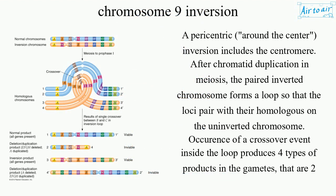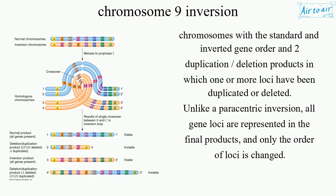A paracentric inversion, around the center, includes the centromere. After chromatid duplication in meiosis, the paired inverted chromosome forms a loop so that the loci pair with their homologous on the uninverted chromosome. Occurrence of a crossover event inside the loop produces four types of products in the gametes: two chromosomes with the standard and inverted gene order, and two duplication-deletion products in which one or more loci have been duplicated or deleted.